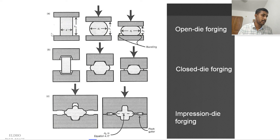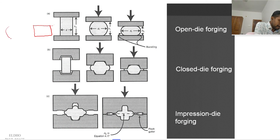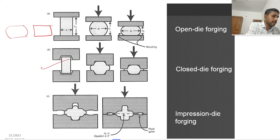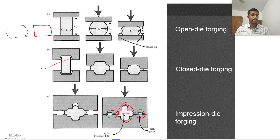In open die forging, after upsetting, the final product is not a simple flat disc but a barreled-shape product. In closed die forging, the workpiece takes the shape of the die cavity with flash formed around it. There are additional forging types like blocker, conventional forging, and precision forging that will be discussed later.